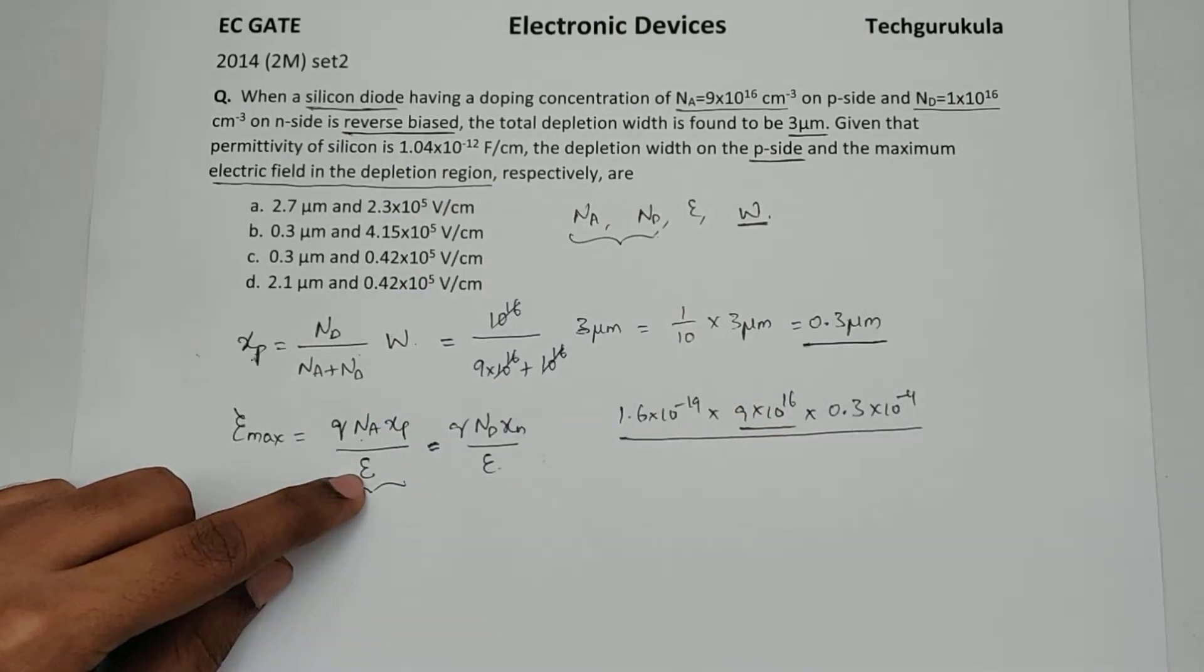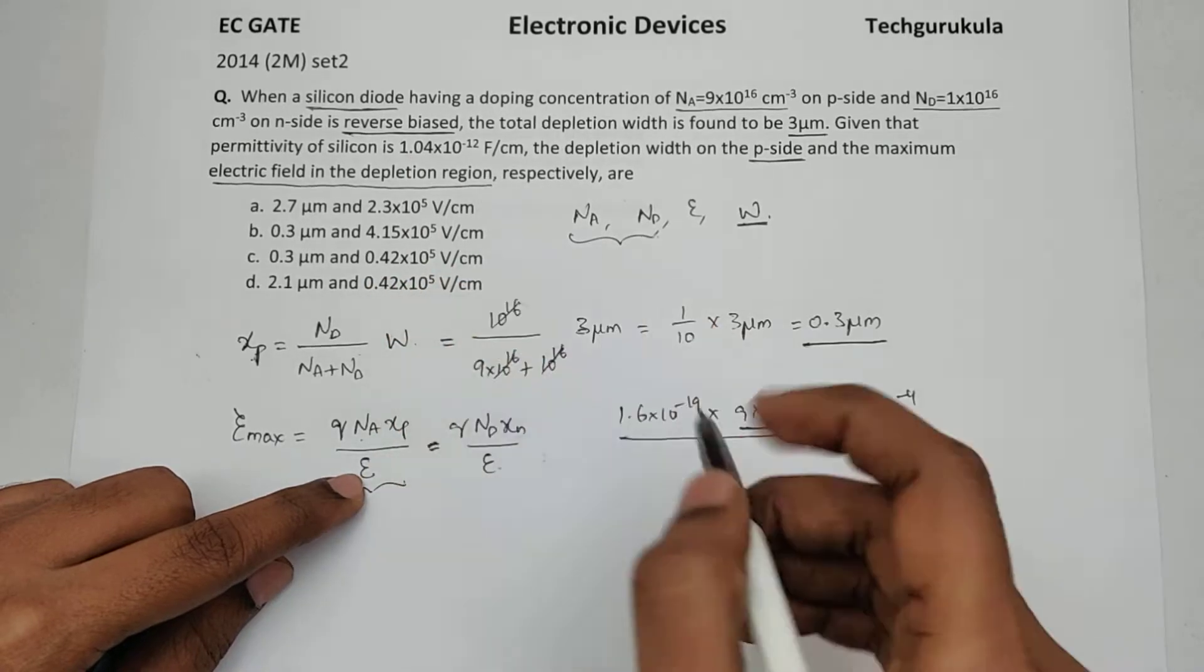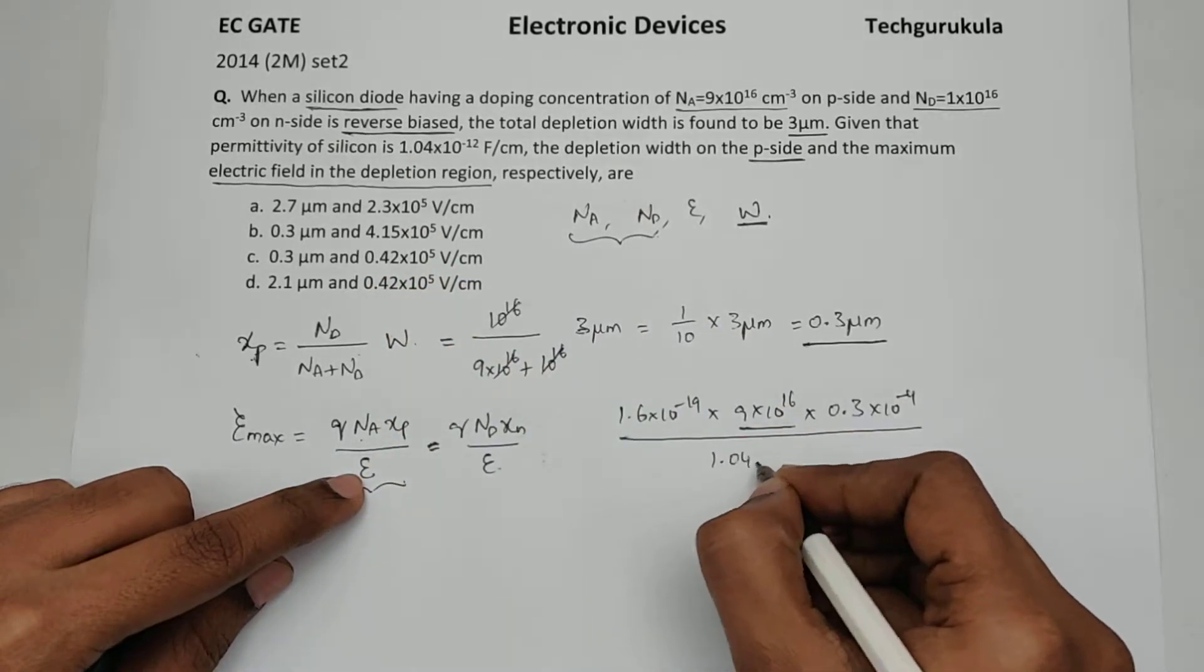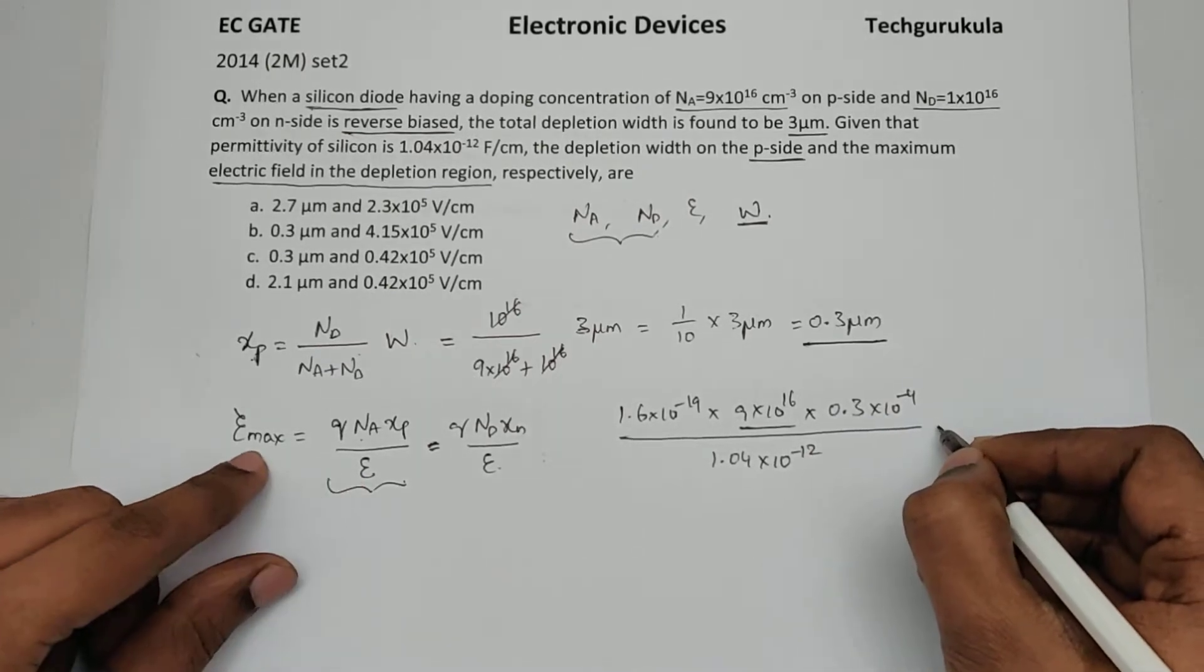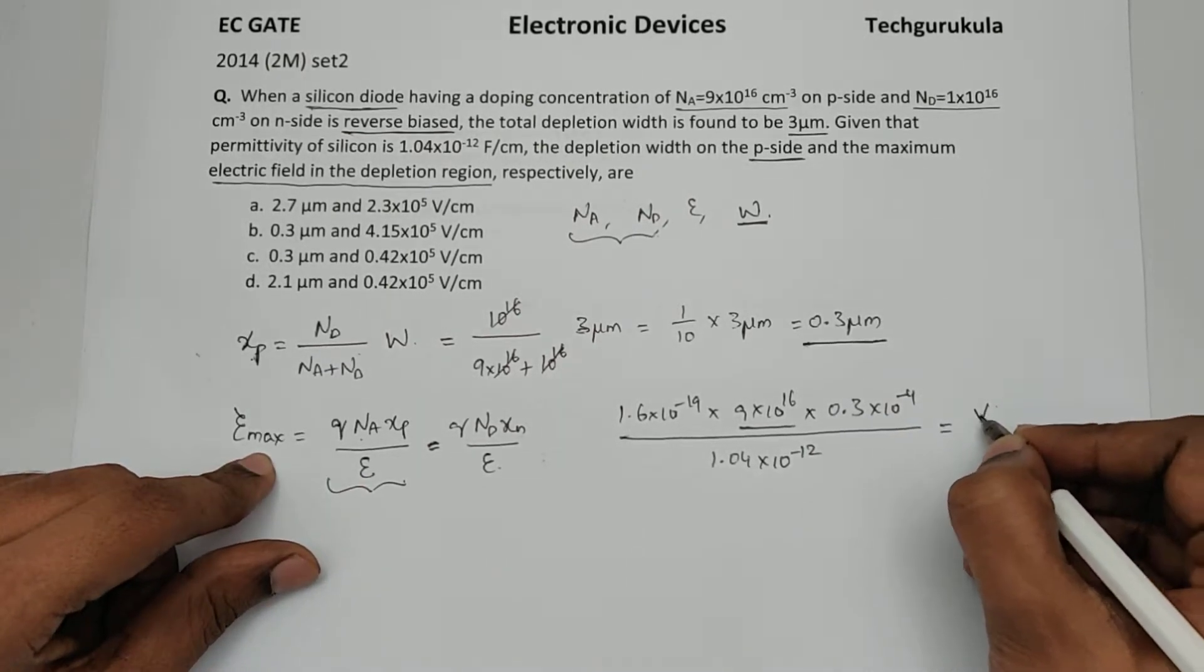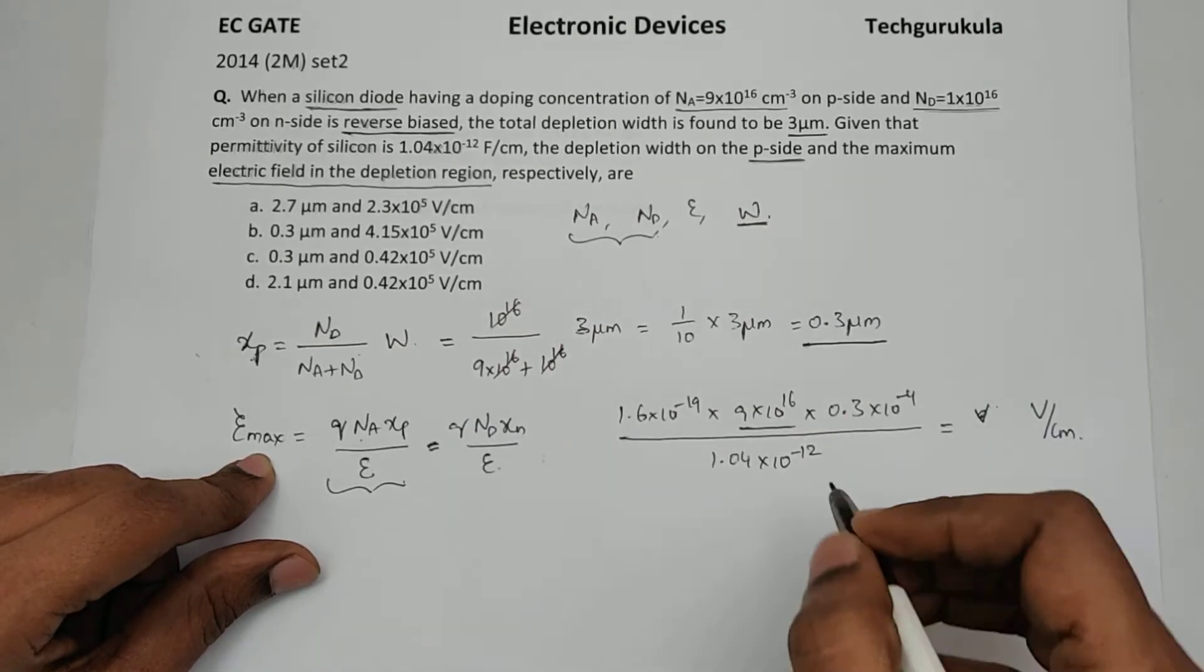Divided by epsilon. Even the epsilon value is given per centimeter. So now everything is in centimeters. So the electric field will be in terms of volt per centimeter now. Let us find this value.